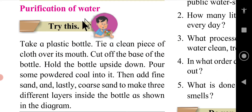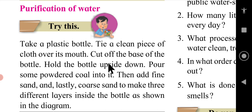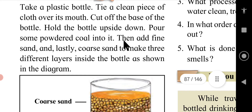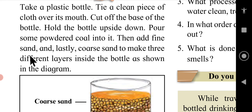Purification of water. Try this: take a plastic bottle, tie a clean piece of cloth over its mouth, cut off the base of the bottle, hold the bottle upside down, and pour some powdered coal into it. Then add fine sand and lastly coarse sand to make three different layers inside the bottle, as shown in the diagram.